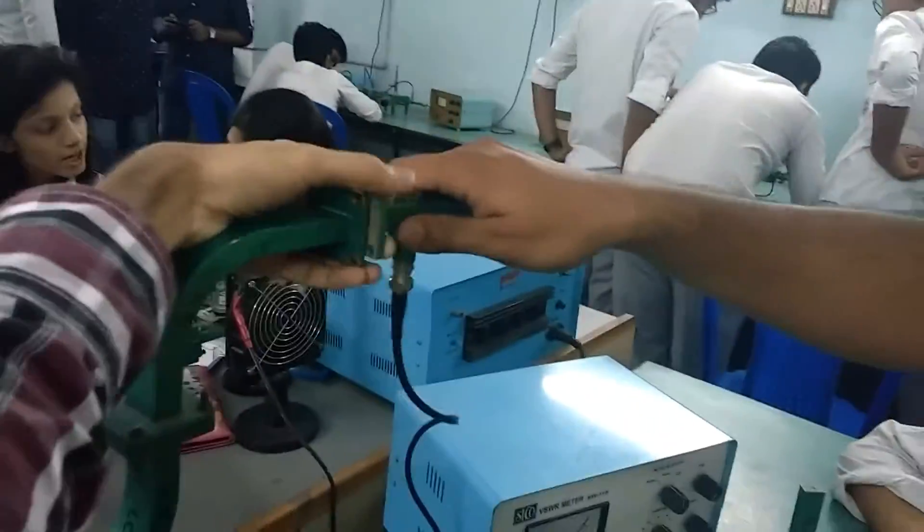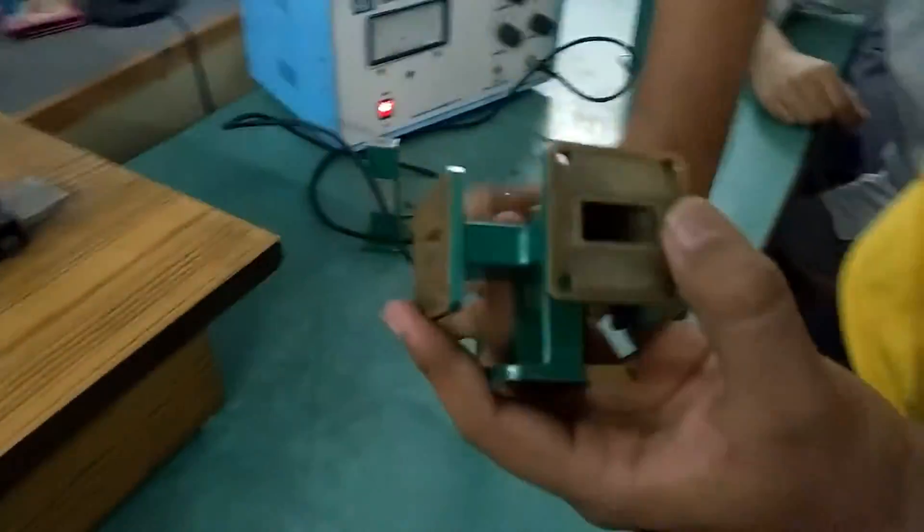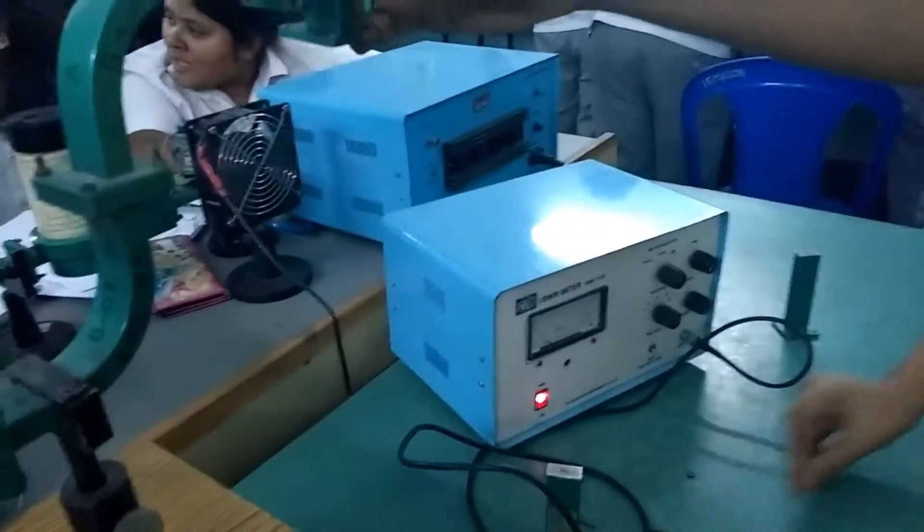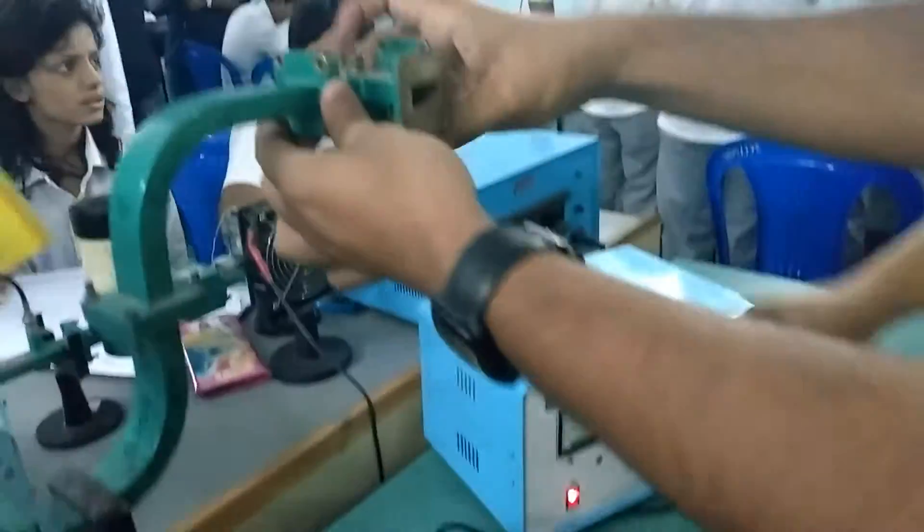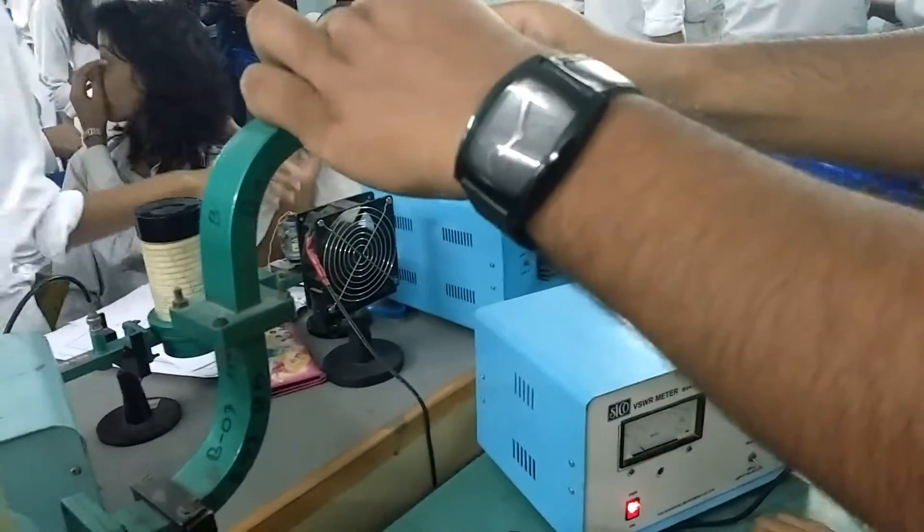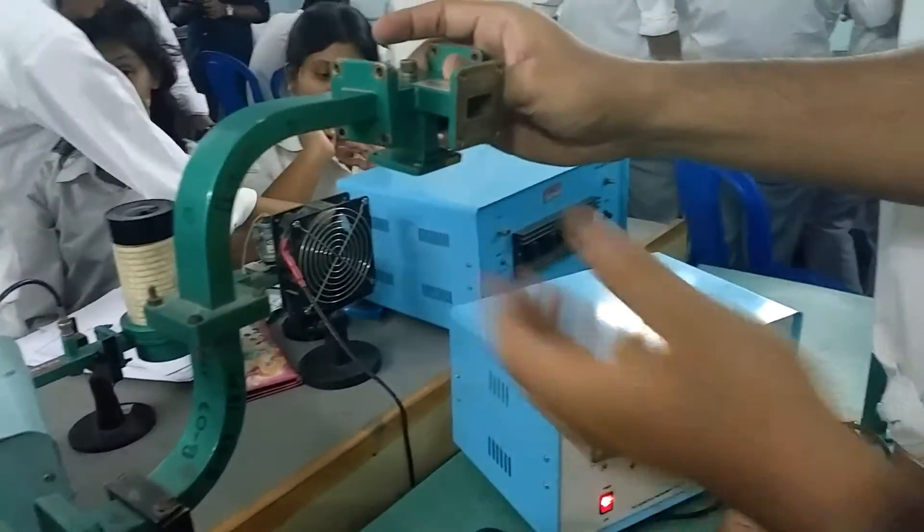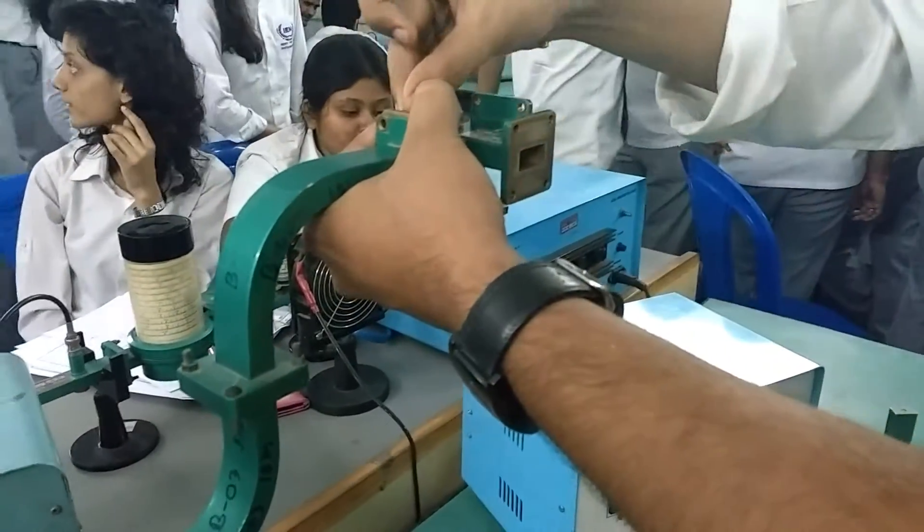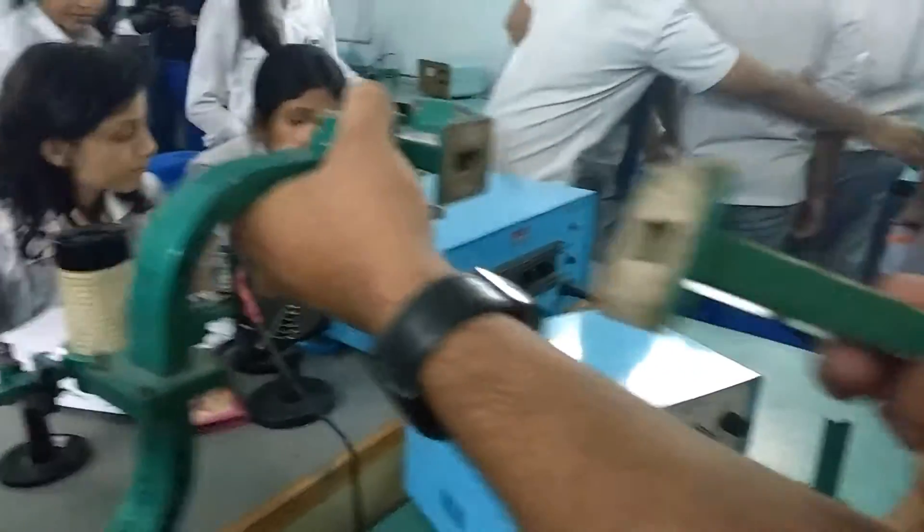Now our task is to use any one port of the magic T as the input port. Another port will be the output port and the remaining two ports are sorted with matched load. These are the matched loads.